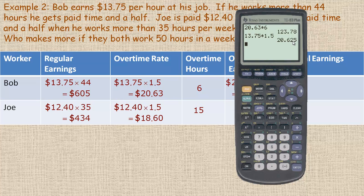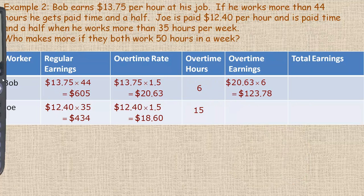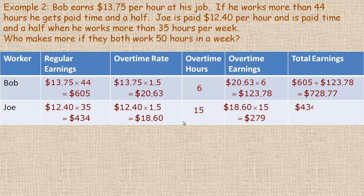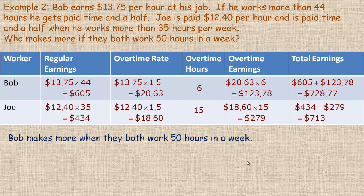Joe earns $18.60 for each of his 15 overtime hours: $18.60 times 15 = $279. His overtime earnings are considerably higher than Bob's because he earns overtime for many more hours. Adding it all up: Bob makes $605 + $123.78 = $728.77, and Joe makes $434 + $279 = $713. Bob still makes more when they both work 50 hours, but Joe has caught up considerably. That's the end of the tutorial.